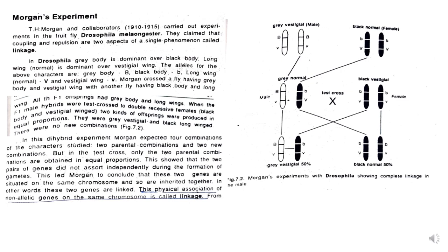We have discussed coupling and repulsion in previous lectures of this series, please refer to that. In the experiment conducted by Morgan, he took Drosophila as experimental material. In Drosophila, grey body is dominant over black body and long wing is dominant over vestigial wing. The alleles are: capital B for grey body, small b for black body, capital V for normal wing, and small v for vestigial wing.